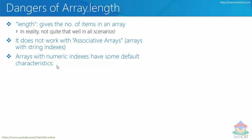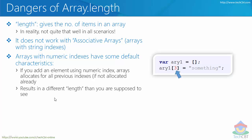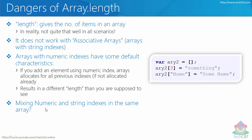Next, arrays with numeric indexes have some default characteristics. If you add an element using a numeric index, the array allocates for all of the previous indexes if they haven't been allocated already. Imagine array1 is empty and you immediately assign a value to index 3 without providing values for positions 0, 1, and 2 — you're going to see a different result when you check length.